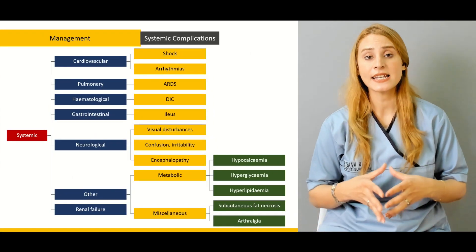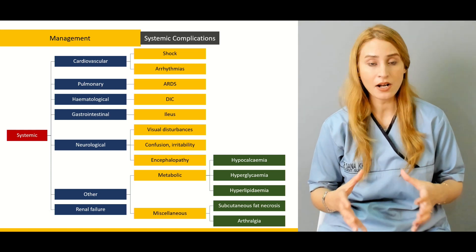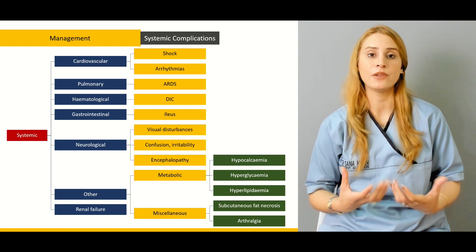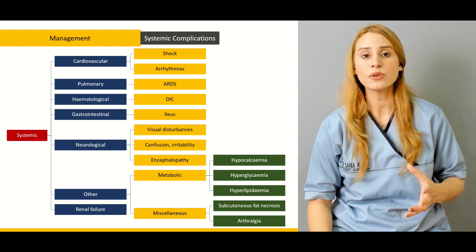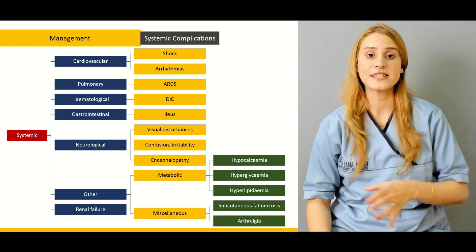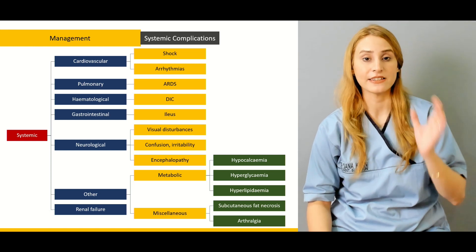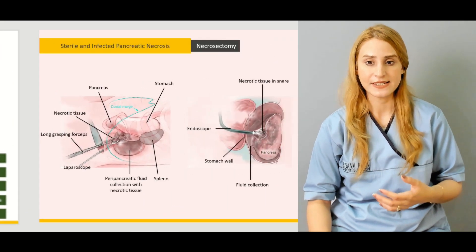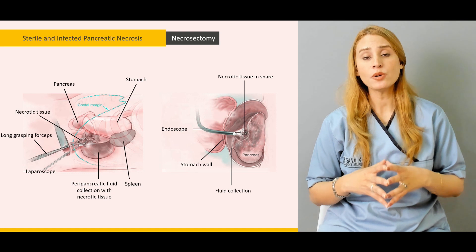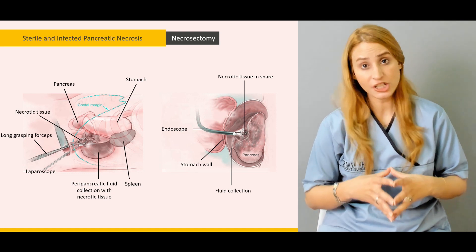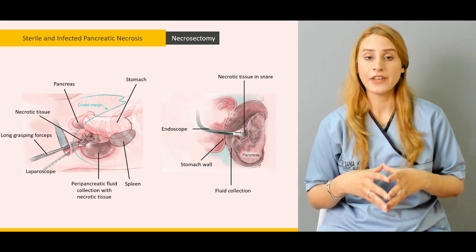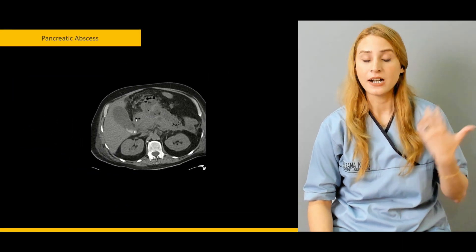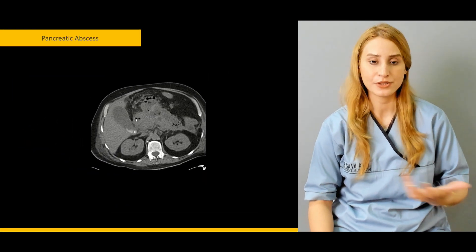Another thing we'll be discussing is the systemic complications and the local complications. Acute pancreatitis is a widespread phenomenon involving different systems, so we'll be talking about its effect on different organs — cardiovascular, pulmonary, hematological, GIT, neurological, and renal. Then, we'll be talking about the surgical management options available for acute pancreatitis and when we are actually going to proceed with surgical management.